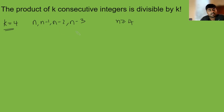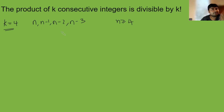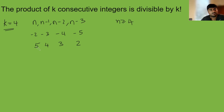And what if n is negative? Well, if n is negative, all four of these numbers are negative, but they'd have a corresponding positive counterpart. So for example, if this was minus 2, minus 3, minus 4, and minus 5, when we multiply them together that's the same as 5 times 4 times 3 times 2 — the same as the case where n is 5.